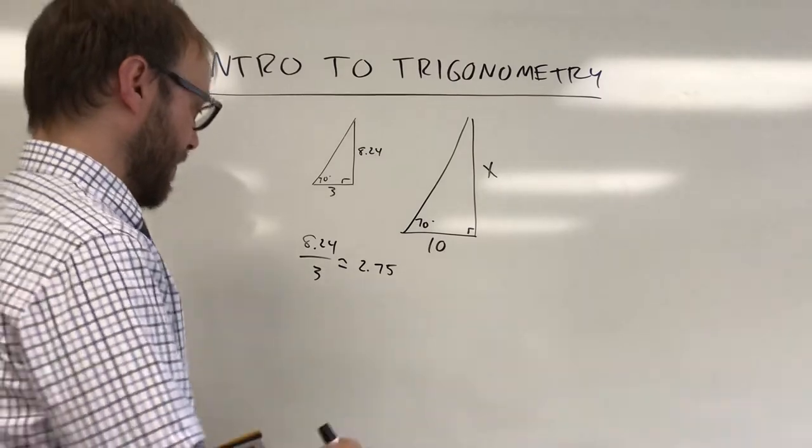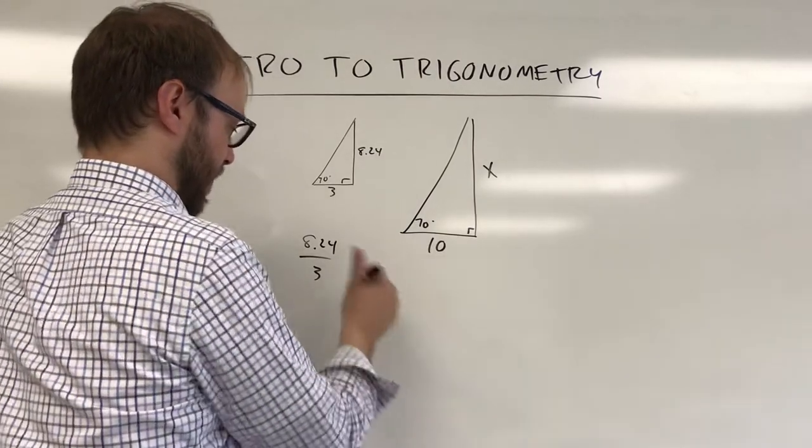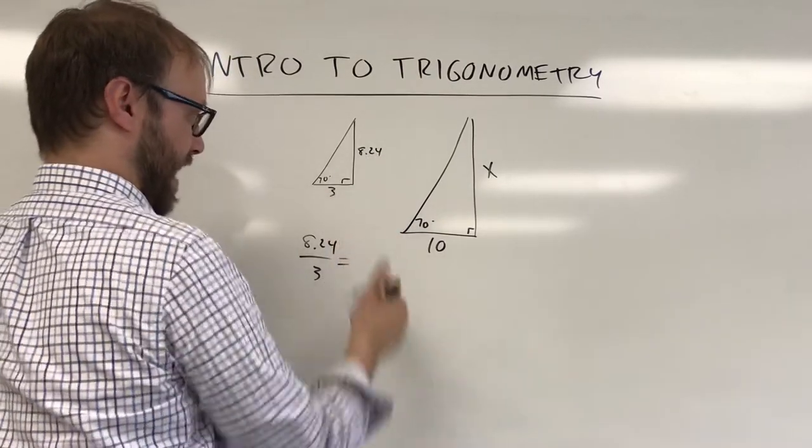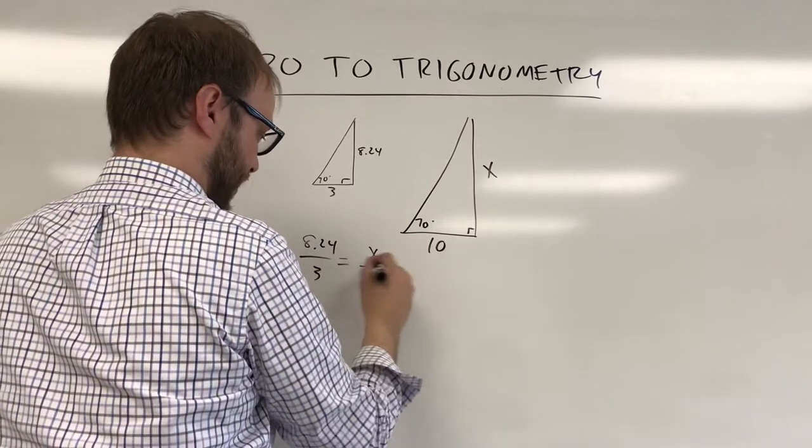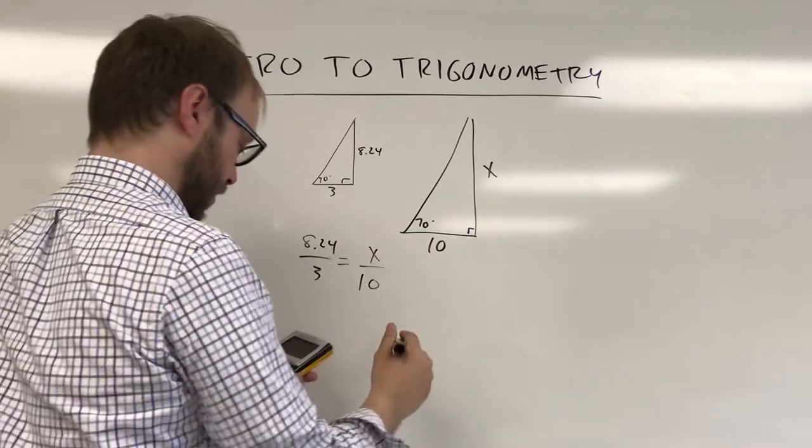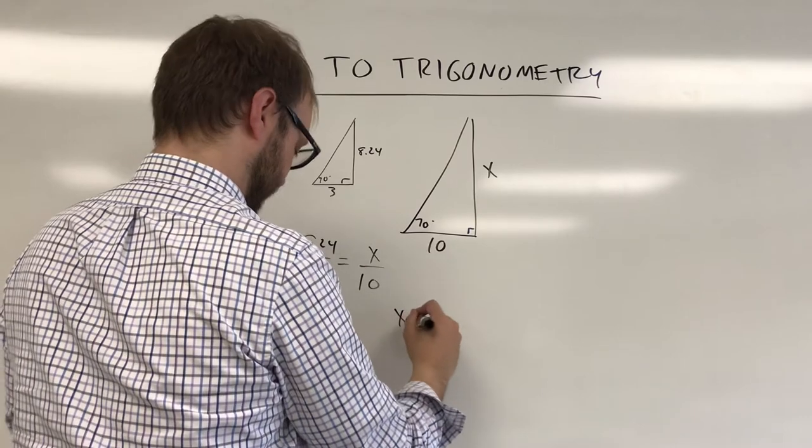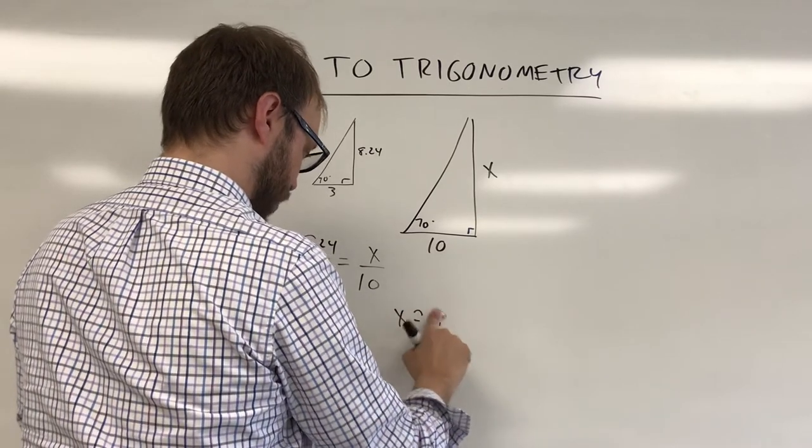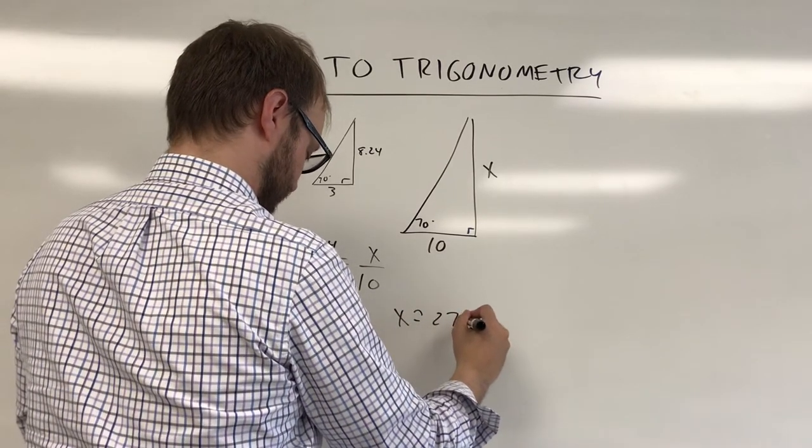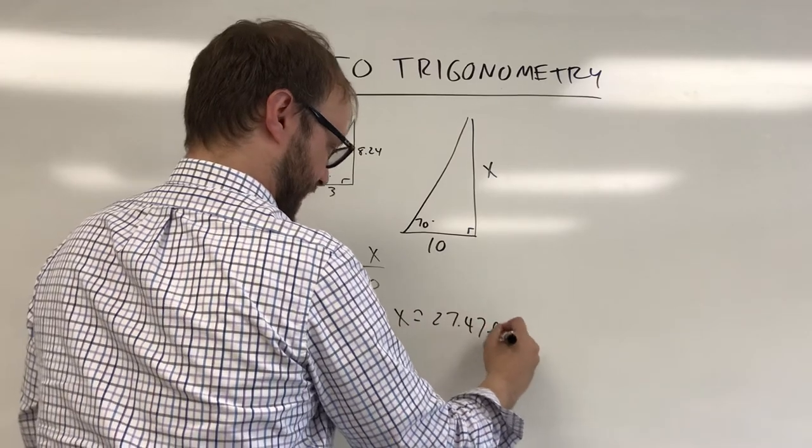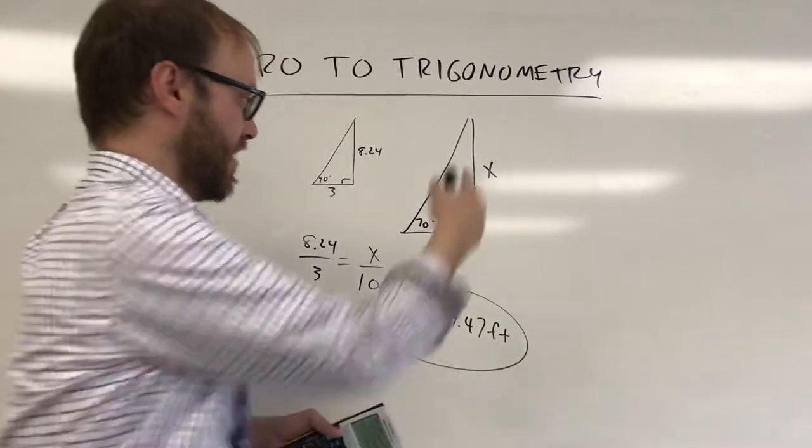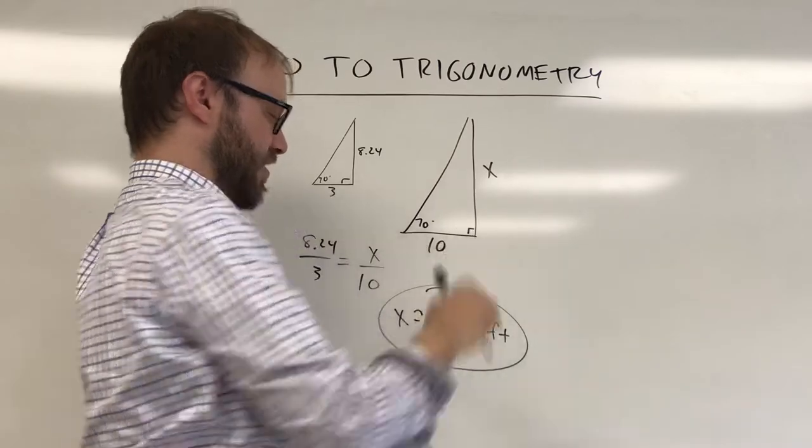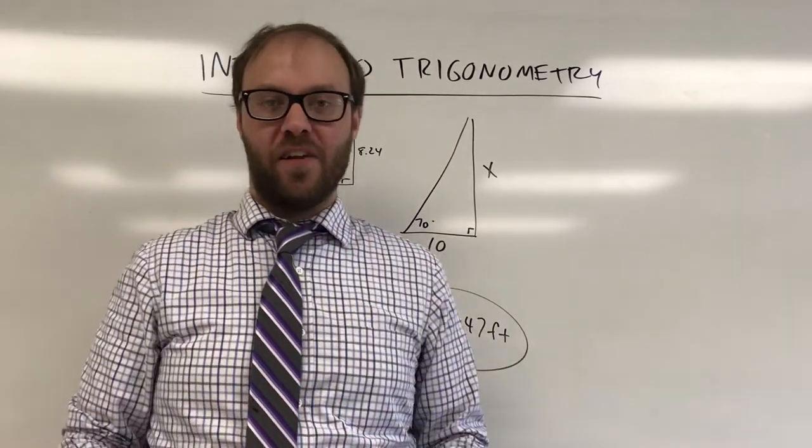So for right now, you could solve the problem that way, or you could just do a straight proportion, right? You could do a height over a base is equal to a height over a base, and you could solve that equation. And if you cross multiply and solve there, you're going to find out that X is approximately 27.47 feet. In other words, the tree is about 2.75 times as tall as it is wide, and that's going to give us that overall height.